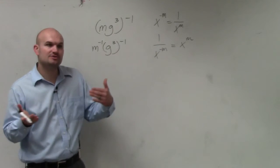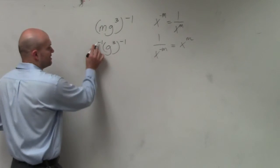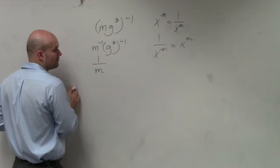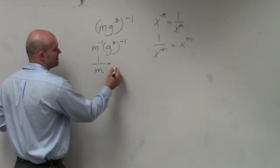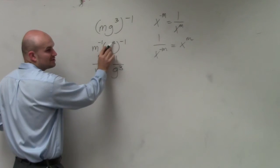So when you have a negative power, to make it positive, we just need to put it as its reciprocal. So therefore, m to the negative 1st power would be 1 over m, and then times 1 over g cubed.